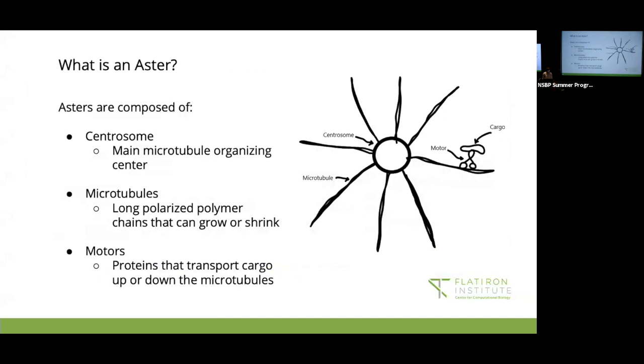So an aster is first made of a centrosome in the middle, and then from the centrosome, we have thousands of microtubules which branch off of it. So microtubules are long polymer chains which can polymerize or depolymerize, meaning they can grow or shrink when they gain or lose a polymer. Then they're also polarized, meaning they have plus ends and minus ends. So the plus end is on the outer edge of the aster, and then the minus end is on the inside toward the centrosome.